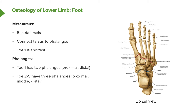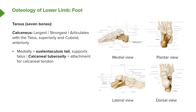There are five metatarsals connecting to the phalanges of the digits. Toe one has the shortest metatarsal. For the phalanges, it is a similar arrangement as the hand: toe one has two phalanges, a proximal and a distal, while toes two to five have proximal, middle, and distal phalanges.